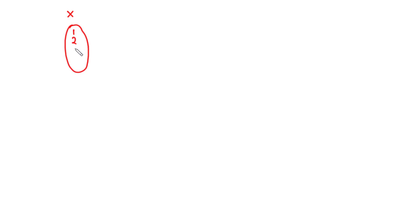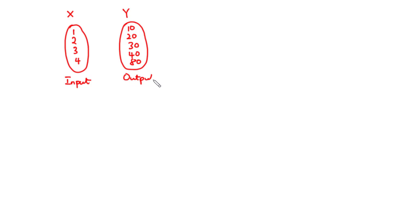Let's consider two non-empty sets X and Y. Assume that X is made up of elements 1, 2, 3, and 4, and then Y is also made up of elements 10, 20, 30, 40, and 80. X is said to be the set of inputs and Y is said to be the set of outputs. So we can say that 1 maps to 10, 2 maps to 20, 3 maps to 30, and 4 maps to 40.